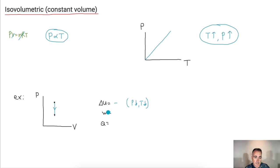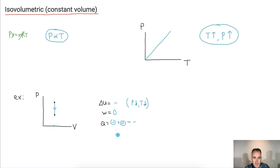How about the work done by the system? The work done is the area under the curve, but this is a vertical line — there's no area, so the work done equals zero. And remember, Q is always just delta U plus W. So that means negative plus zero gives me a negative — Q is negative.